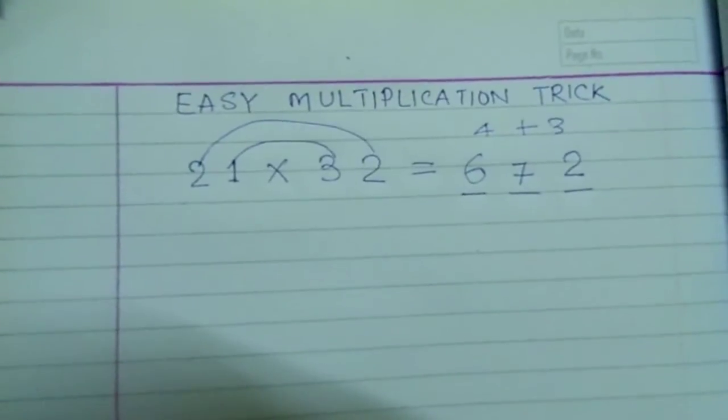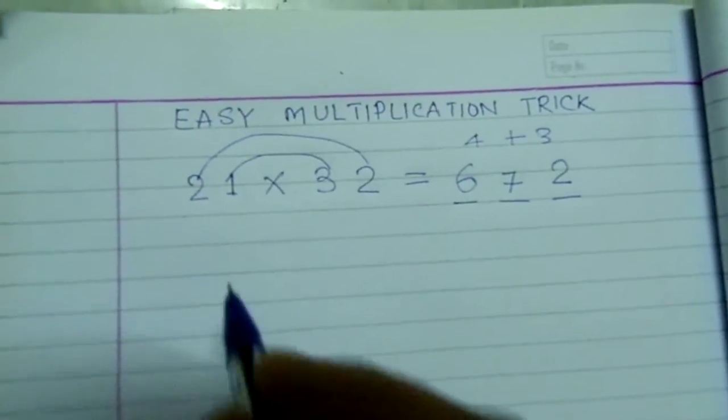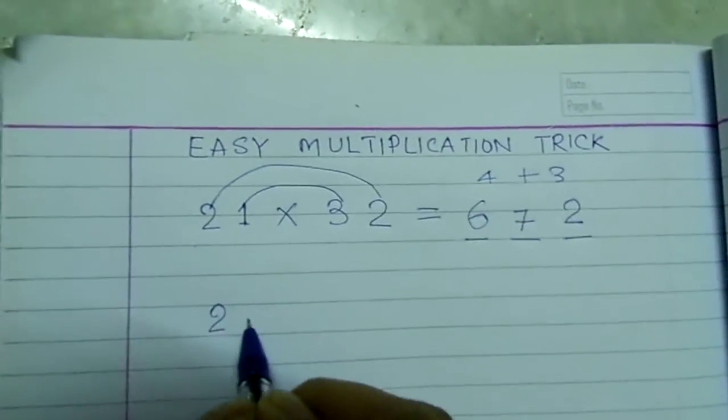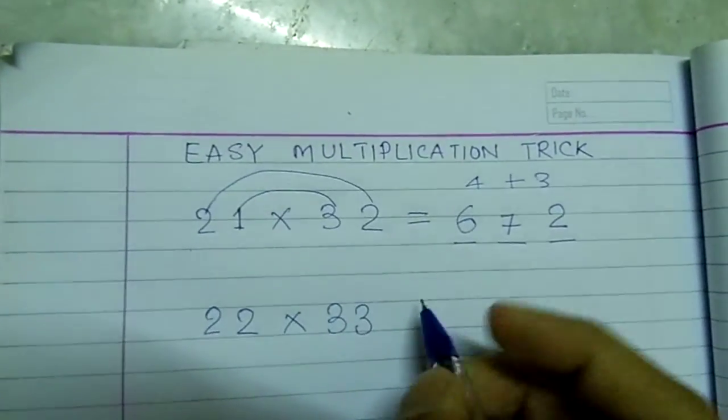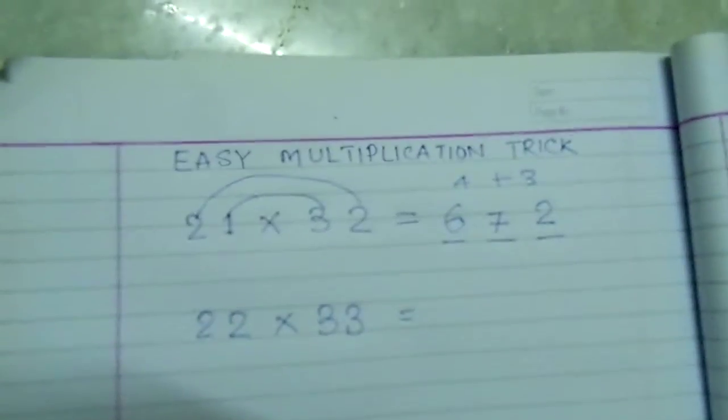This is such an easy method. Now, let us take another example. We will multiply 22 into 33. What we will do?